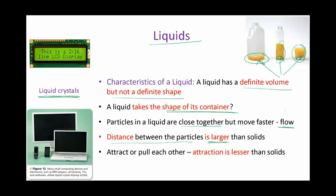In liquid crystals, it's actually an artificial liquid — some chemical compound — that is in a liquid state, but the particles have a geometrical shape. Because of this crystalline shape, they have very good electrical properties and they can be used in manufacturing displays. We call it the LCD — liquid crystal display. It's used in the screens of laptops, computers, televisions, and cell phones.